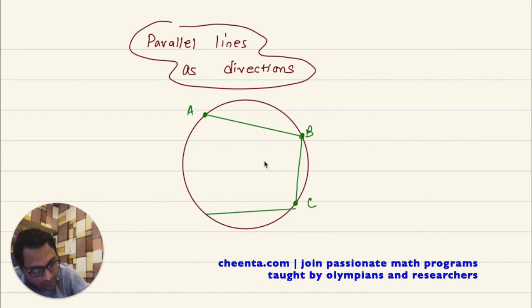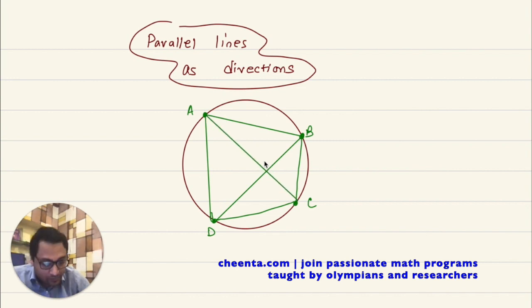So maybe I'll just change this. Sorry, D. Now let's join the diagonals. So BD and AC as well. BD and AC.